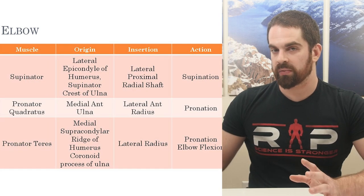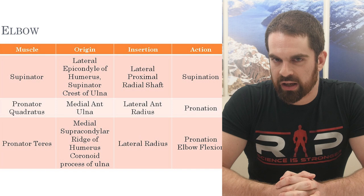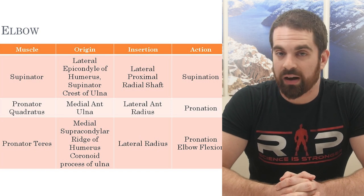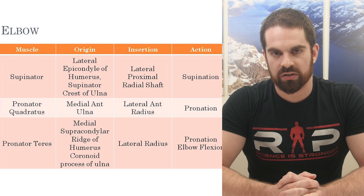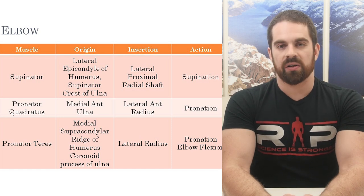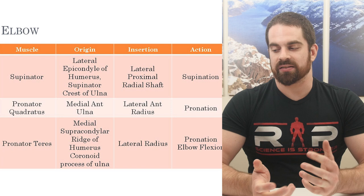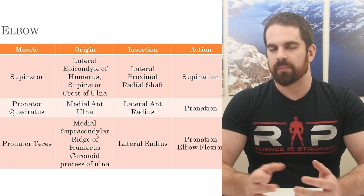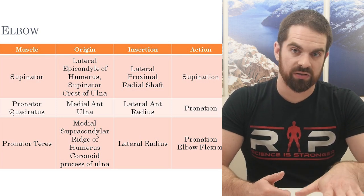Next we have the supinator. What do you think the supinator does? Supination — don't get that wrong on an exam. It moves towards a palms-up position. We also have the pronator quadratus, involved in pronation — the opposite of supination — so it's antagonistic to the supinator. And the pronator teres, as the name implies, helps in both pronation and elbow flexion. If you see supinator: supination. If you see pronator quadratus or pronator teres: pronation. Those are no-brainers.